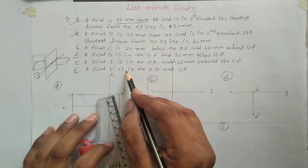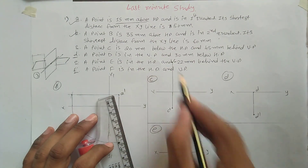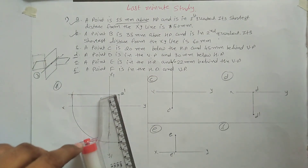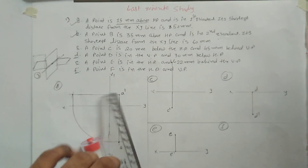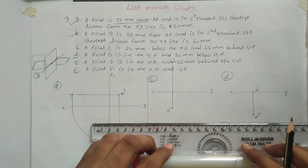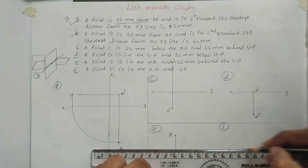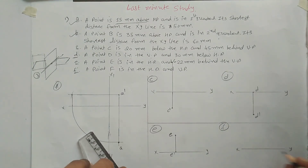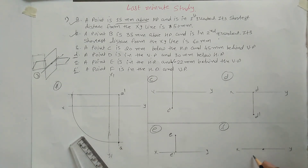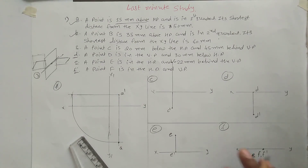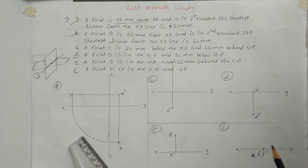Point F is in the HP and in the VP, which means it is on the XY intersecting line. So draw the XY line — this point is F and F-dash. These are the front view and top view of point F, representing the projections of point F.